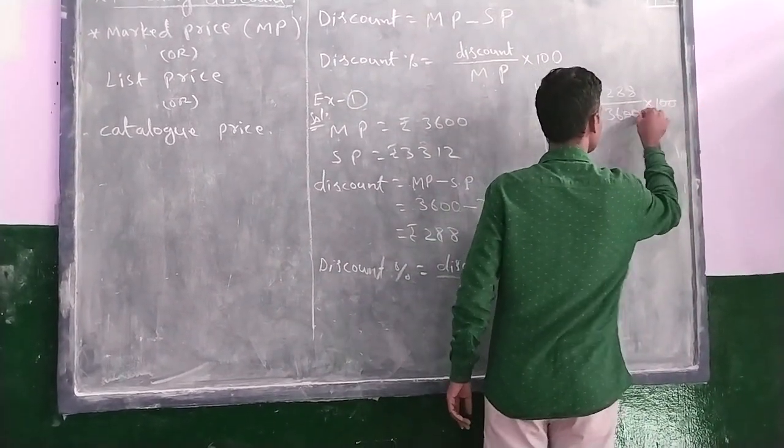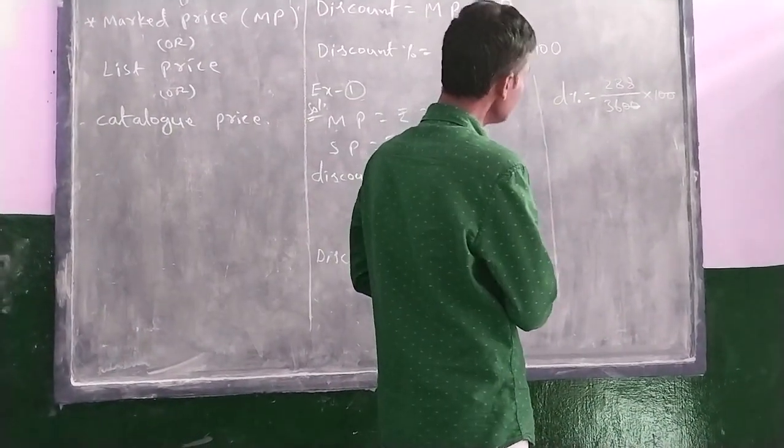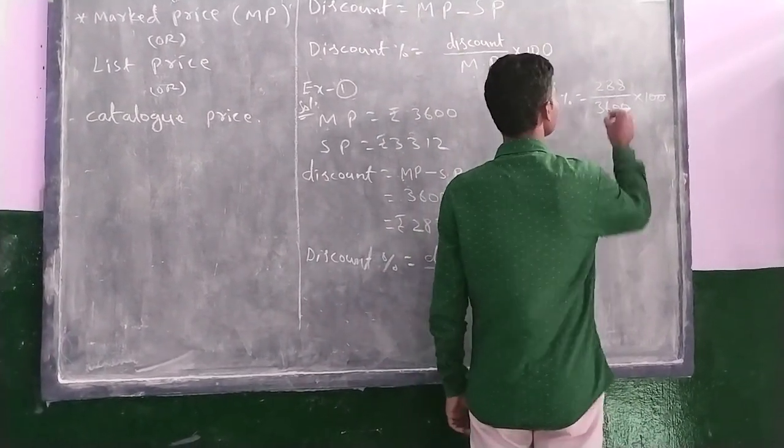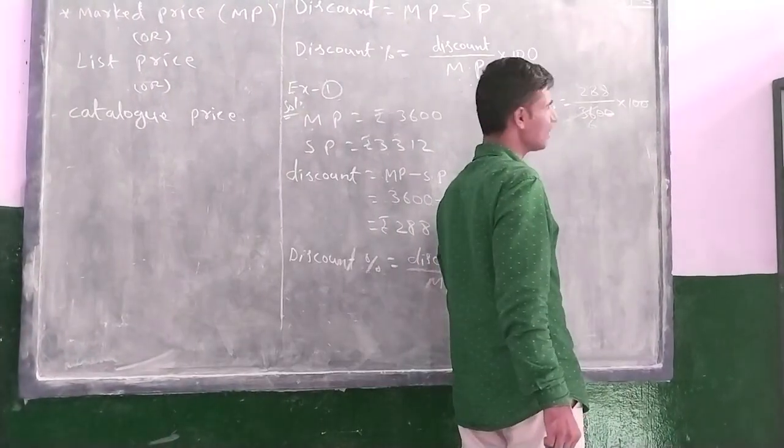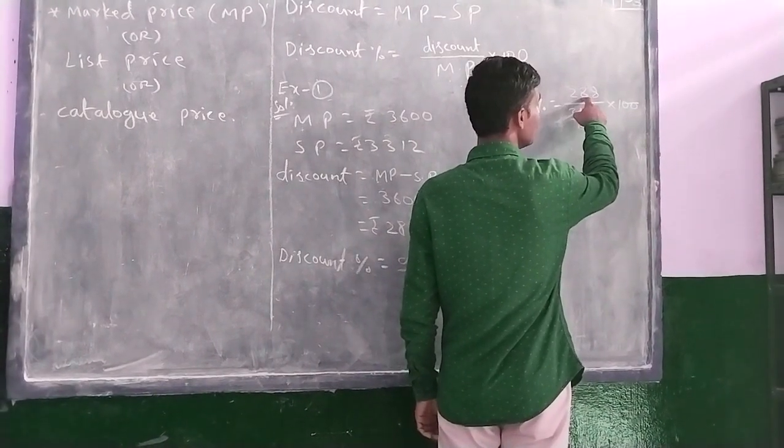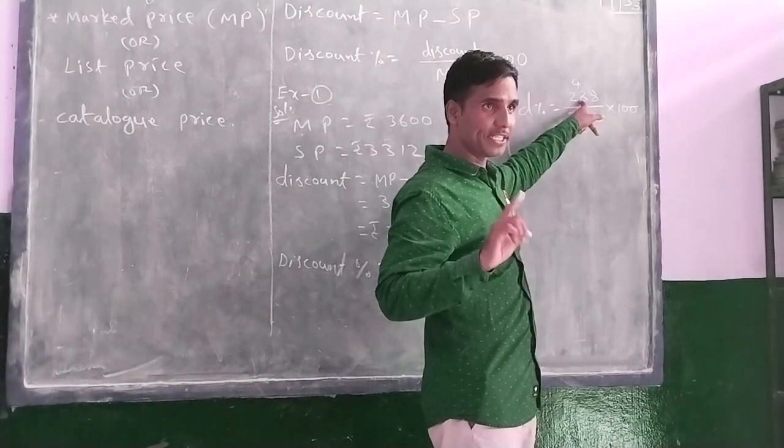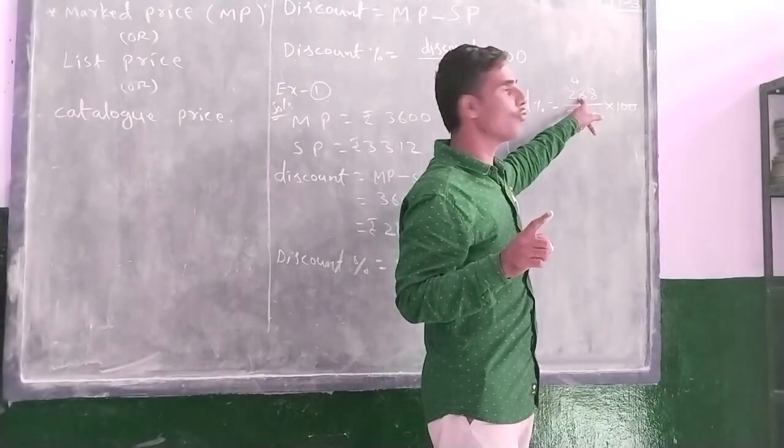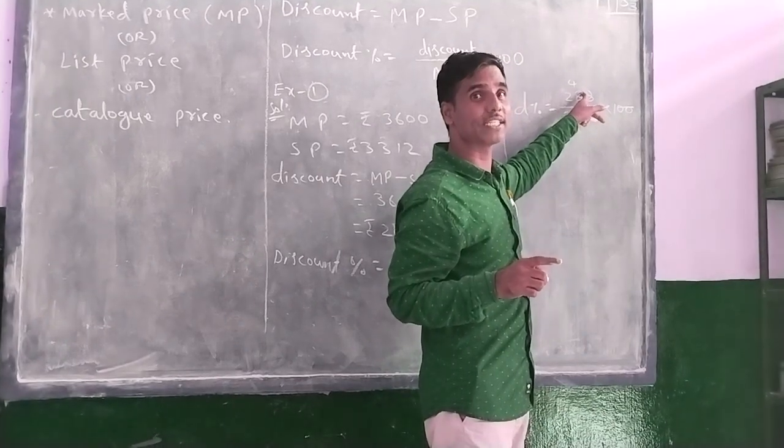So here, 2 zeros, 2 zeros we can cancel. Now here, shall I cancel here? Which table, 6 table shall I cancel here? 6, 6 are 36. Now here, 28 is there. 6, 4's are 24. 28 minus 24, how much? 4. Here, 8 is there. 48. 48 will come, 6 table?